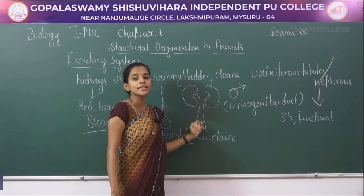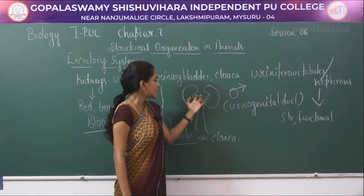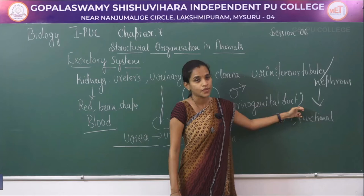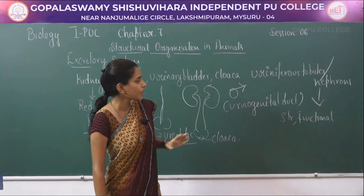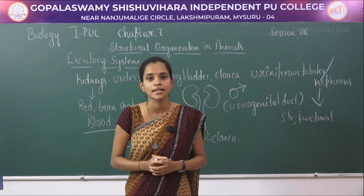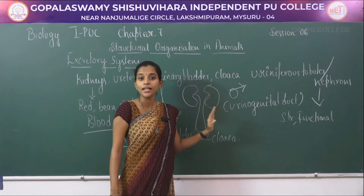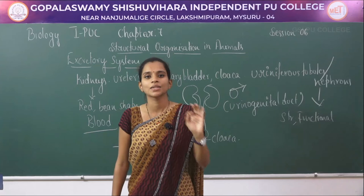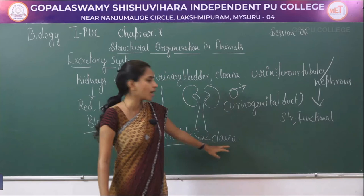In male frogs, the ureters carry both sperm and excretory waste, which is why they are called the urinogenital duct. In females, ureters carry only excretory waste, while eggs are carried in a separate tube called the oviduct, which is present near the kidney as an independent structure. Both male and female release urine and reproductive products through the common opening, the cloaca.